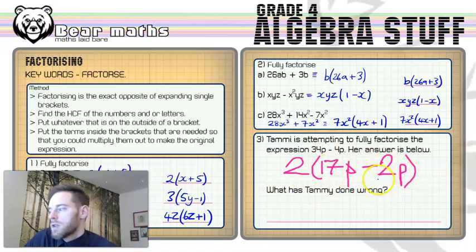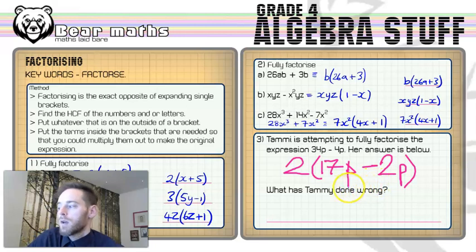You might notice straight away. You could just do the question and figure out where she's gone wrong. If you're confident in your ability to do these, you could do the question yourself. So the highest common factor, yeah, it is 2. She can't take a factor of 4 out. 4 doesn't fit into 34, but 2 does. So she takes 2 out. And then what else can she take out? She can take out this factor of p. And you notice there that she didn't do that. So already we've found the answer to the question, but let's just finish off and just make sure there's nothing else that she's done wrong.